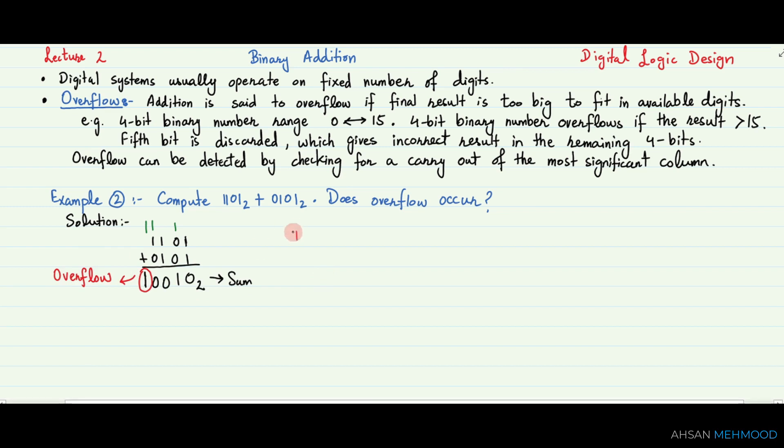If it must be stored as 4 bits, the most significant bit is discarded, leaving the incorrect result of 0010 base 2. If the computation had been done using numbers with 5 or more bits, the result 10010 base 2 would have been correct. This is the end of our lecture. See you in the next video.